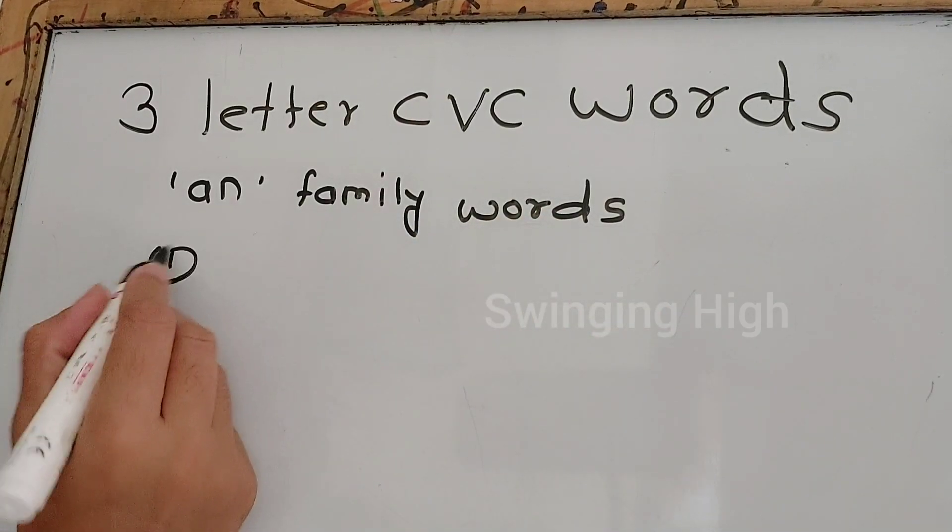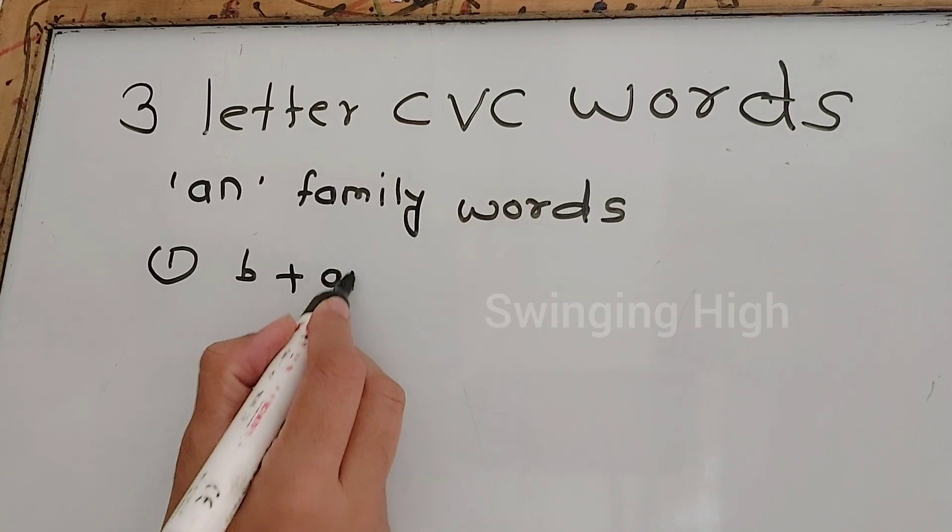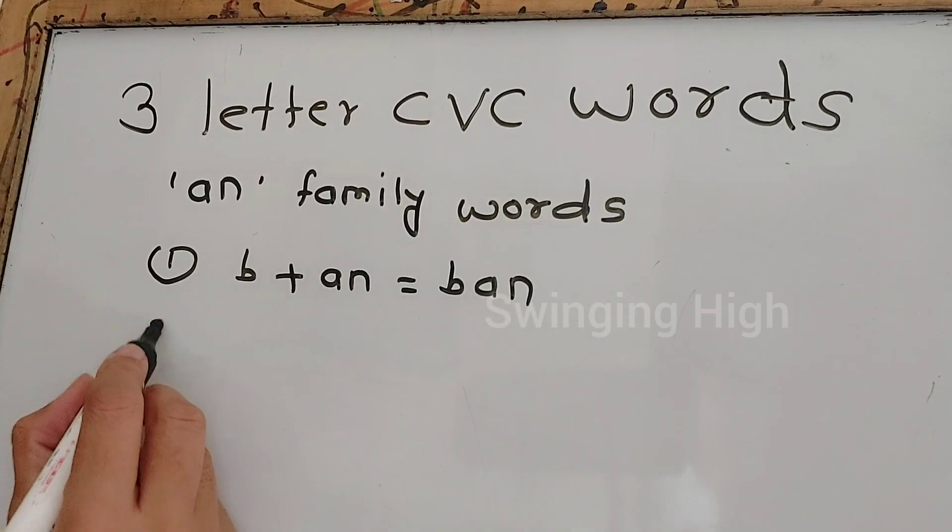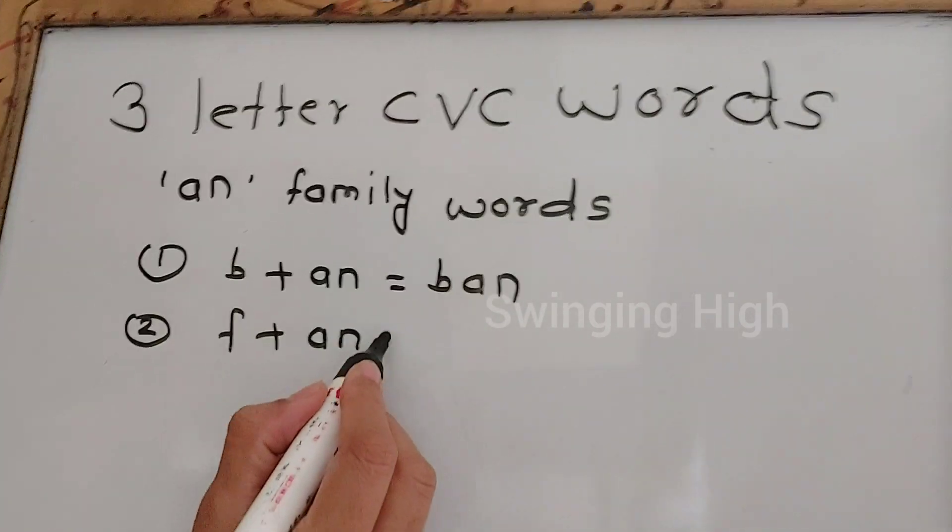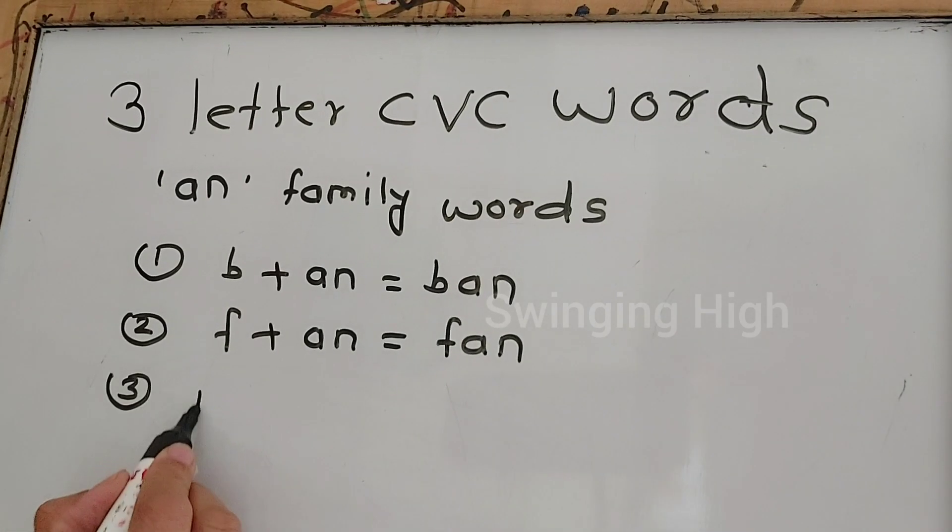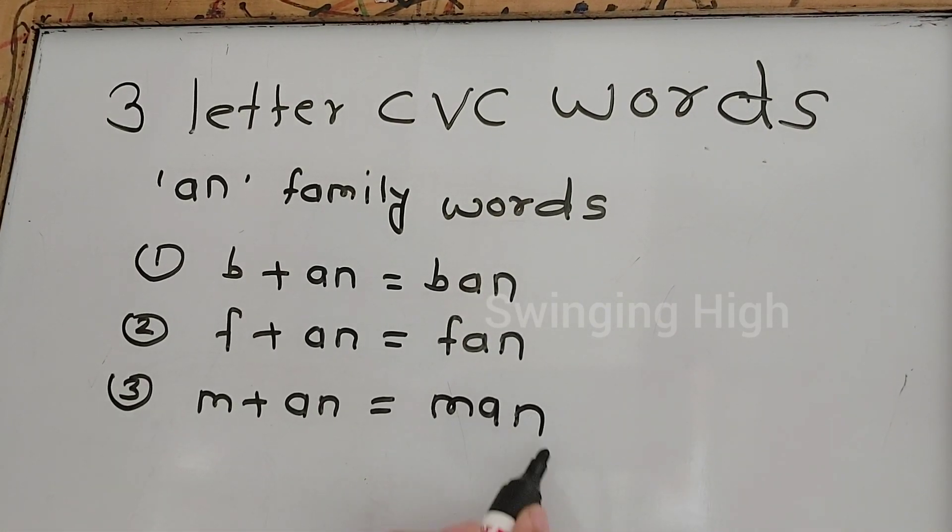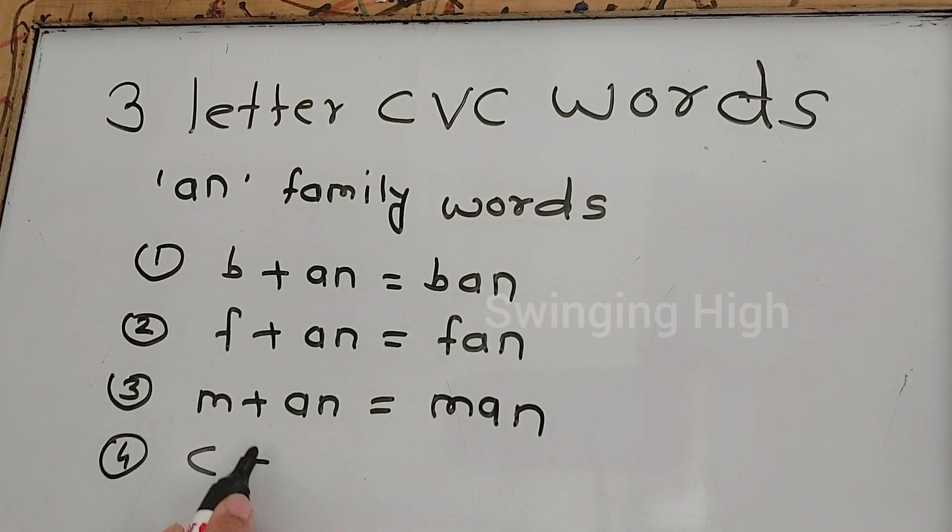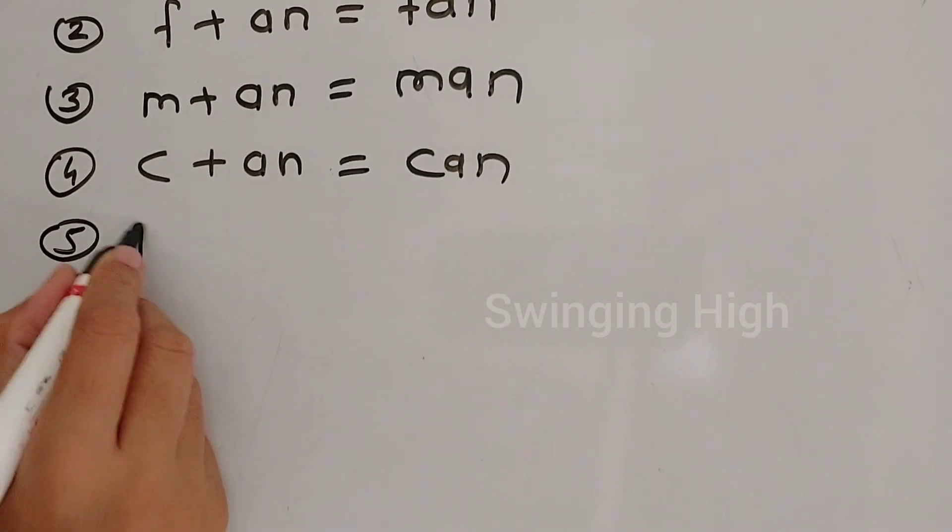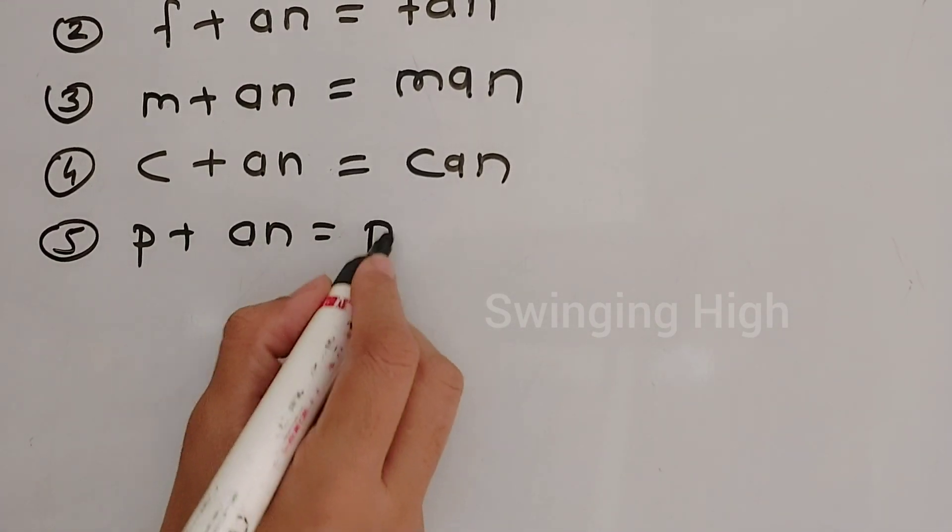First word is B-an, ban. Second, F-an, fan. Third, M-an, man. Fourth one is K-an, can. P-an, pan.